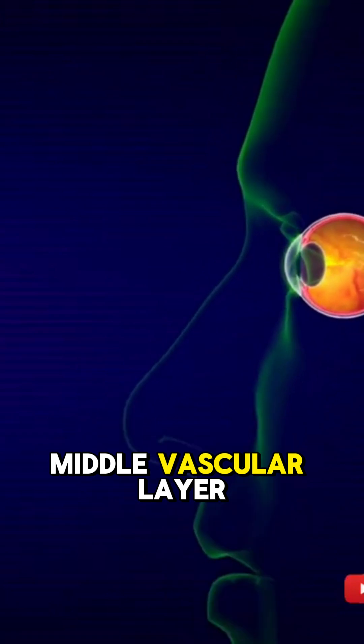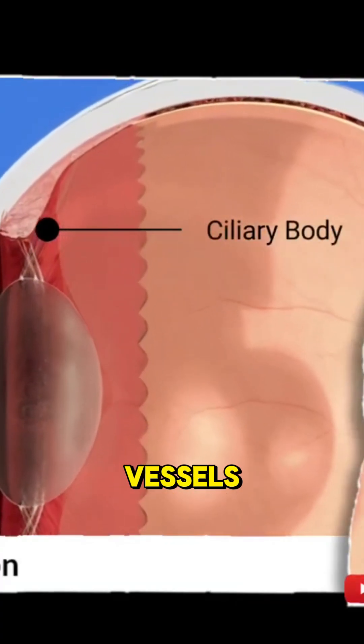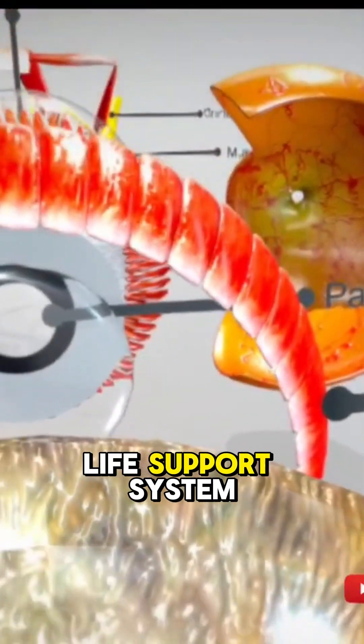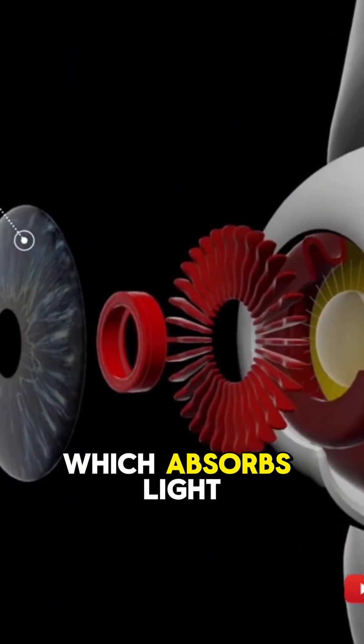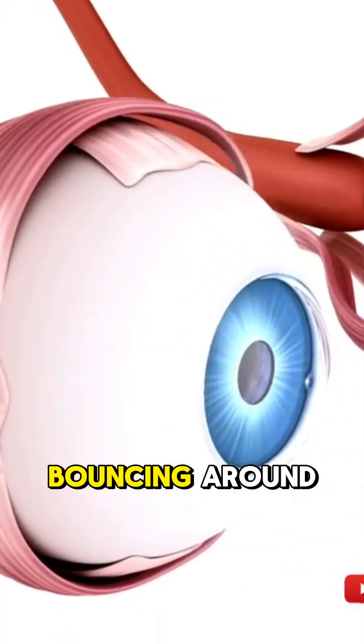Then there's the middle vascular layer, packed with blood vessels. It's the eye's life support system. This is where you find the dark choroid, which absorbs light, stopping it from bouncing around inside.